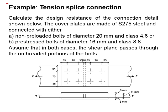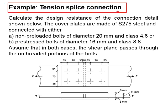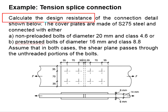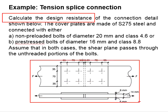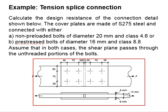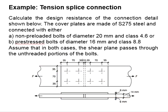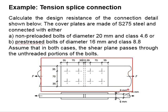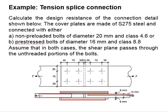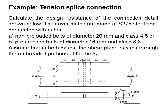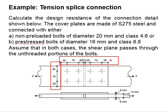Let us try an example to design tensile splice connections. The question asks us to determine the design resistance of the connections for this tensile splice. The plates are made of S275 steel. A series of bolt holes are created, and two cover plates are used to connect two steel plates. The thickness of the steel plates is 14 mm and the thickness of the cover plate is 6 mm. There will be a tensile force acting on the connections, and the positions of the bolt holes are located as indicated in the diagram.